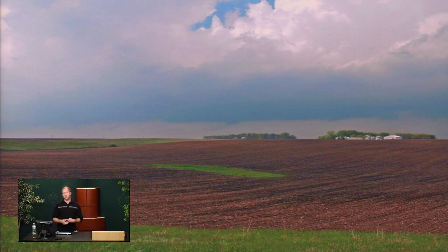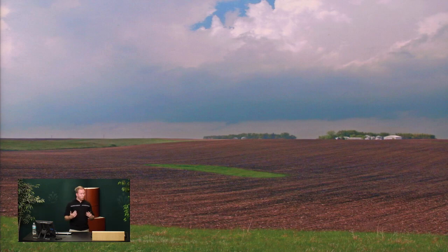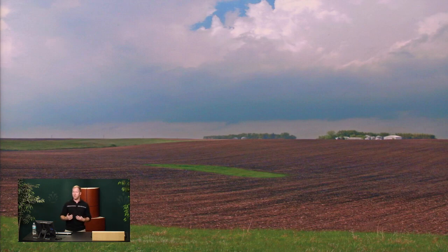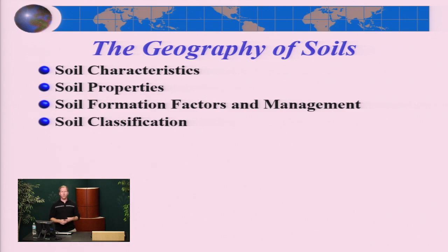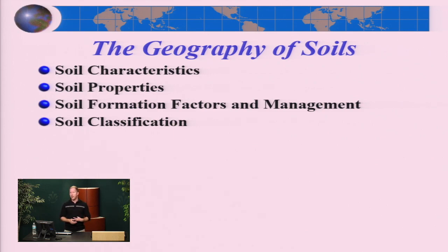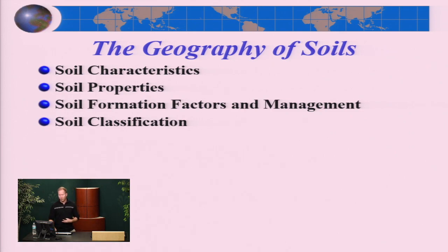After today's lecture, you should be able to talk about the soil's color, its texture, and the different main properties. In the next lecture — lecture 18 — we're going to go through the actual classification system. Today is just identifying the basic properties of soil. We're going to cover soil characteristics, the properties of soil, and how soil forms. The classification system is what we'll cover in lecture 18.